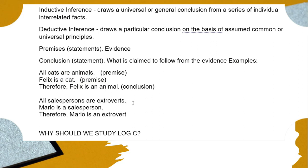Another example for deductive inference: all salespersons are extroverts. Mario is a salesperson, therefore Mario is an extrovert. It is assumed that all salespersons are extroverts due to the nature of their work, that they really have to convince people to buy their products. So this is the general or universal principle; it is assumed to be true. So if all salespersons are extroverts and Mario is a salesperson, we then conclude that Mario is an extrovert. So this is an example of deductive inference. We argue from the general principle to specific one.